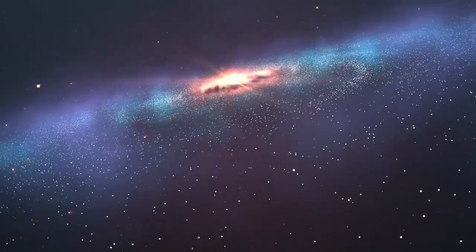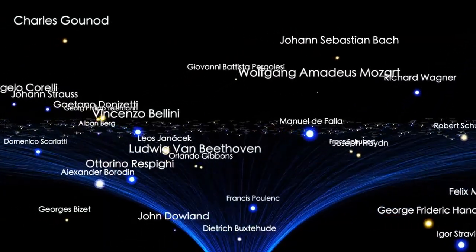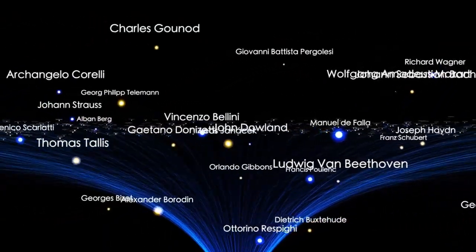And it wasn't alone. Webb kept uncovering more. Across vast regions of the sky, multiple galaxies appeared, each showing complexity and maturity that shouldn't have been possible. This wasn't a glitch in the telescope. The instruments worked flawlessly. The problem wasn't the data. The problem was our theories.